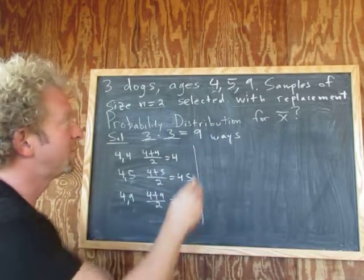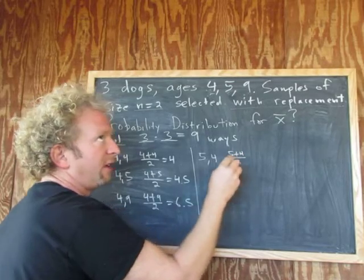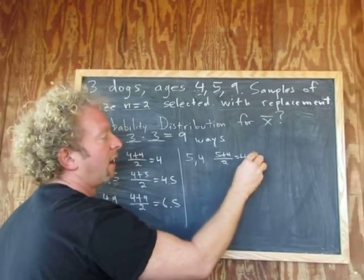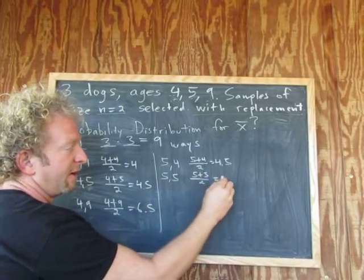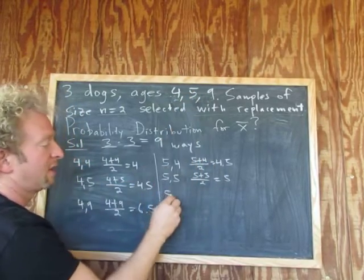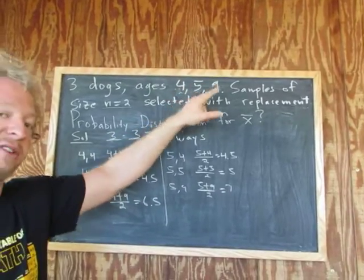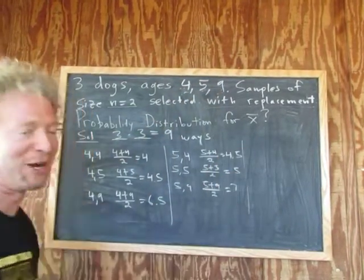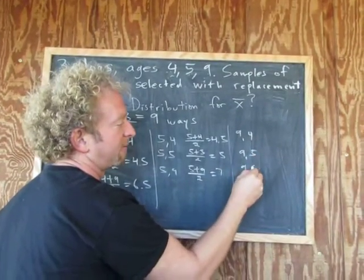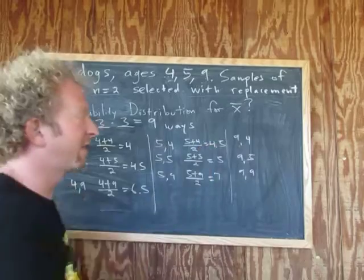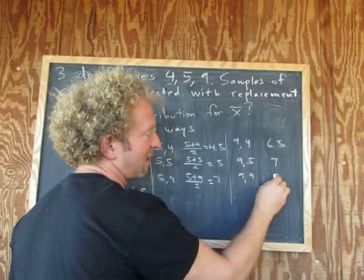Then we do (5, 5) and (5, 9). For (5, 5): five plus five divided by two is simply five. For (5, 9): five plus nine divided by two is 14 over two, which is seven. So we did (5,4), (5,5), (5,9). Last but not least — going kind of fast because it takes forever — we do (9,4), (9,5), (9,9). Nine plus four divided by two is 6.5. Nine plus five divided by two is seven. And nine plus nine is 18 divided by two is nine. So these are all the x-bar values.